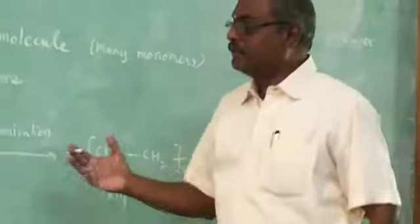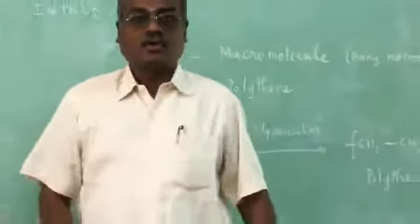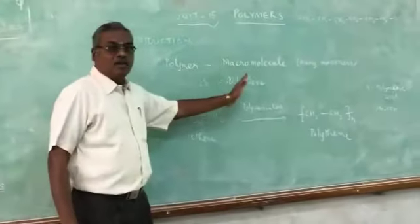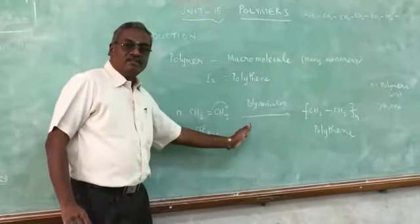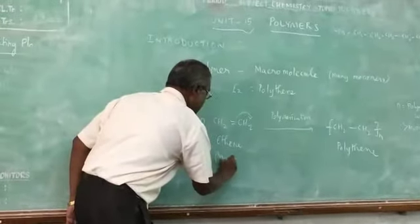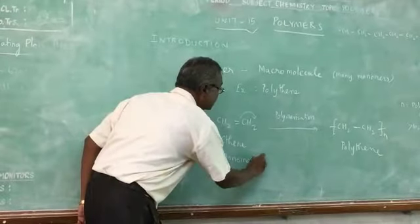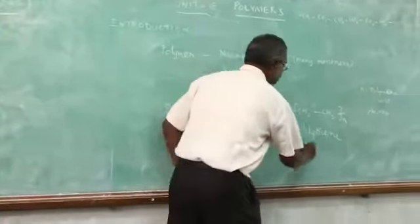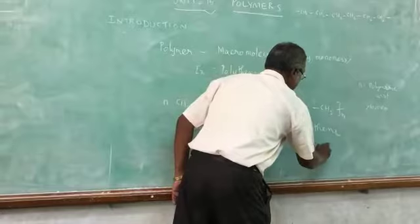So what is polymer? Polymer is a macromolecule contains a large chain, large chain of monomer. This ethene is called as monomer and this polythene is called as a polymer.